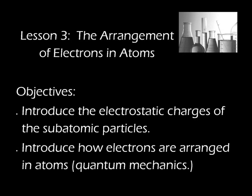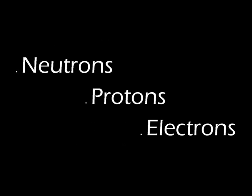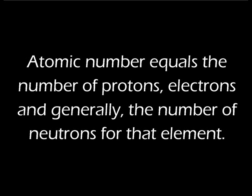In lesson two we discussed the names and locations of the subatomic particles found in atoms. We stated that the atomic number for any element found on the periodic table tells us the number of protons or electrons, and generally the number of neutrons found in each atom of that element. Let's continue now and learn how the electrons are arranged in atoms. Before we do that, let's look a little closer at the protons and the electrons.